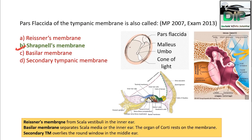This is the tympanic membrane: pars tensa, pars flaccida, handle of malleus, umbo, and cone of light. The cone of light is in the four to five o'clock position — since it is on the right side, this is the right tympanic membrane. If the cone of light were on the left side at seven to eight o'clock, it would be the left tympanic membrane.